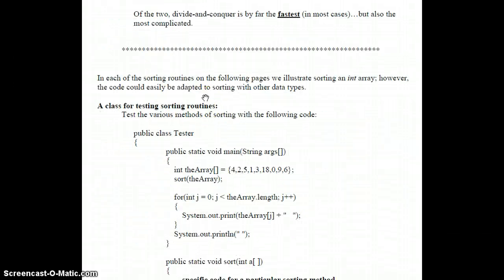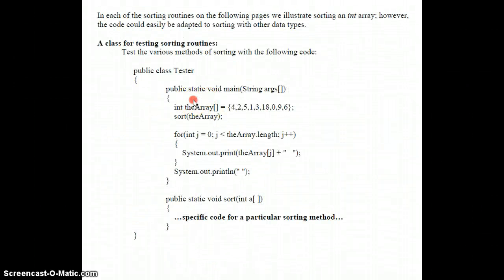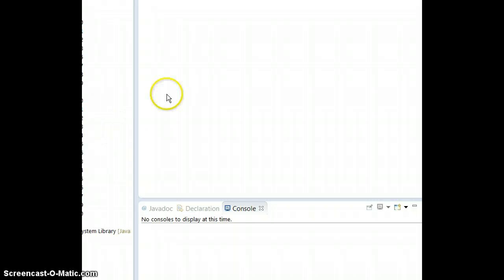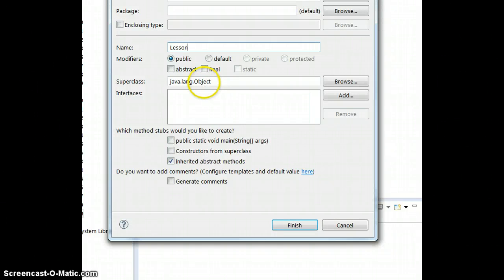If you scroll down, we have a pre-written code in the book. Go ahead, right-click, select all, and I'm going to copy and paste this into Lesson 40 section. I'll make a new class, name it Lesson 40.